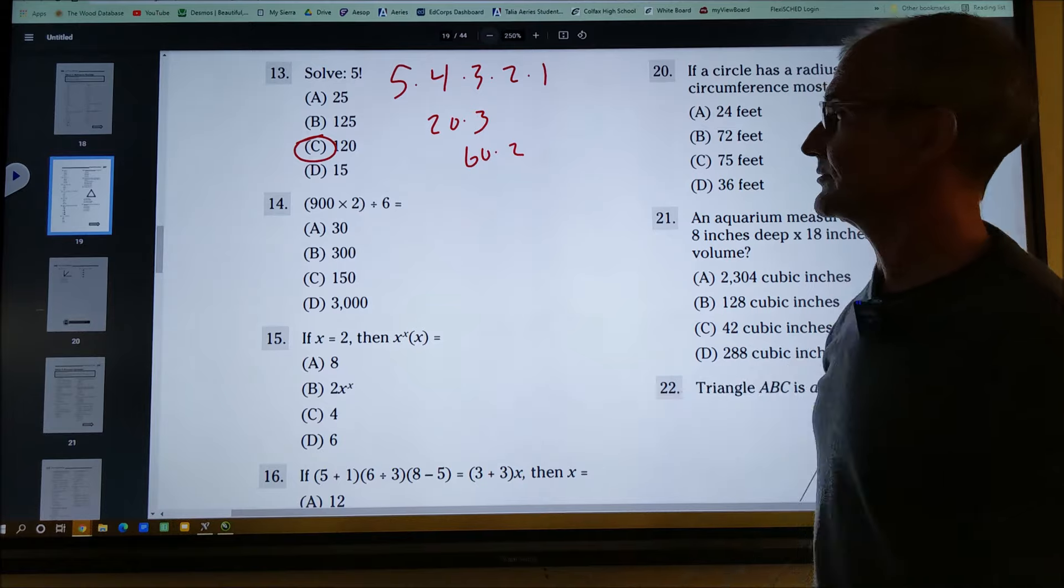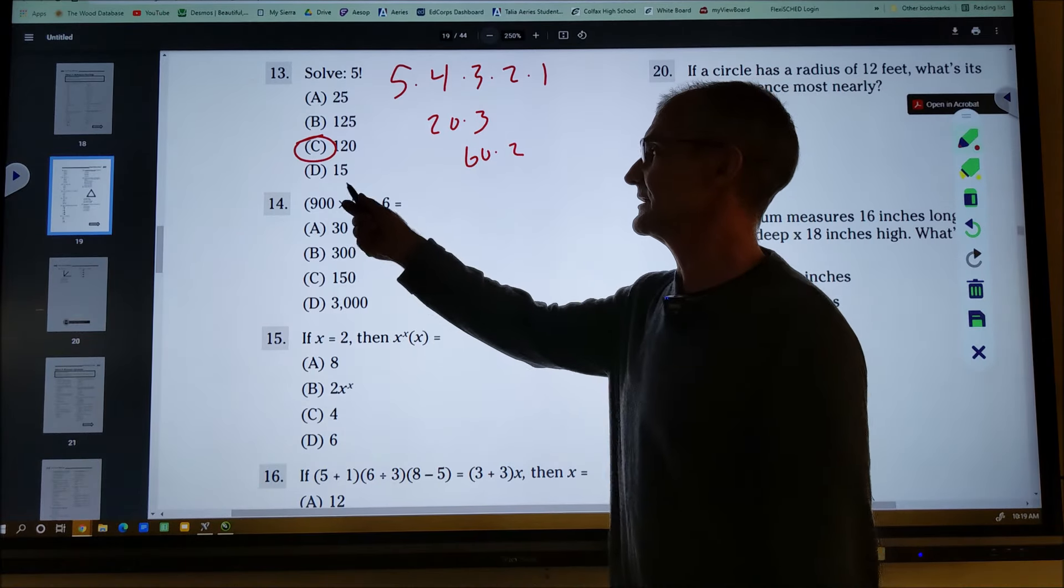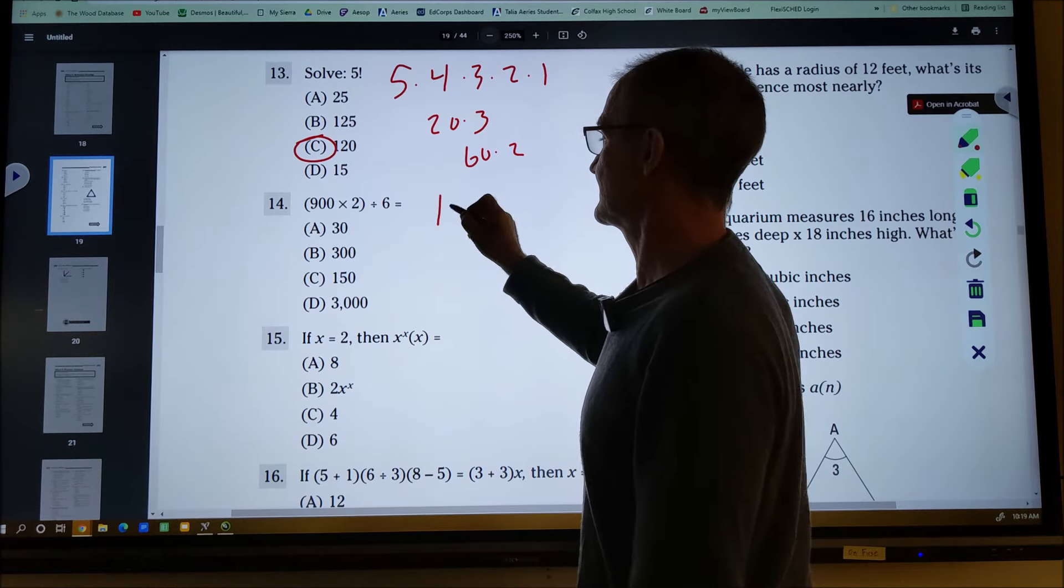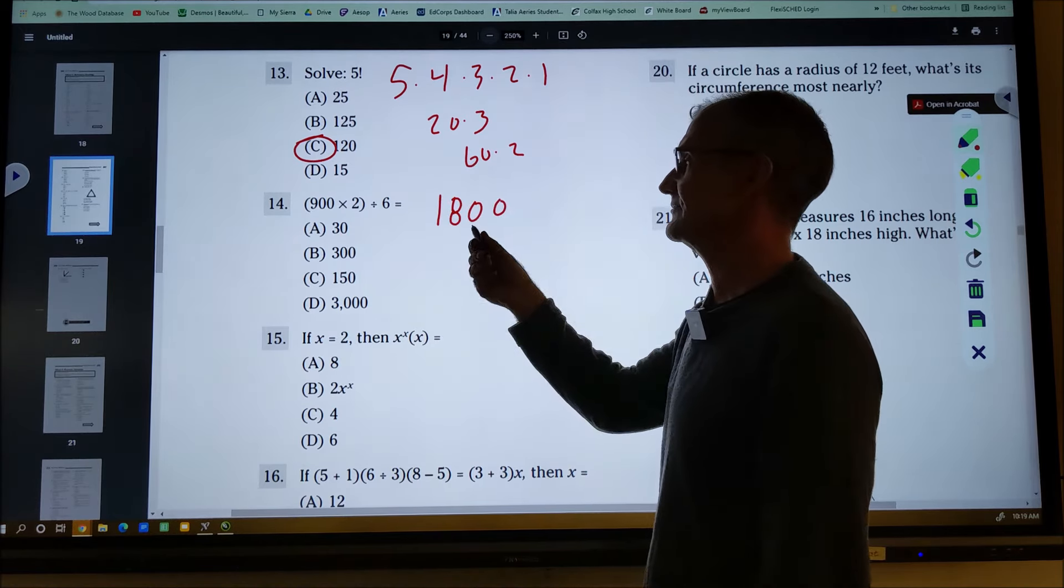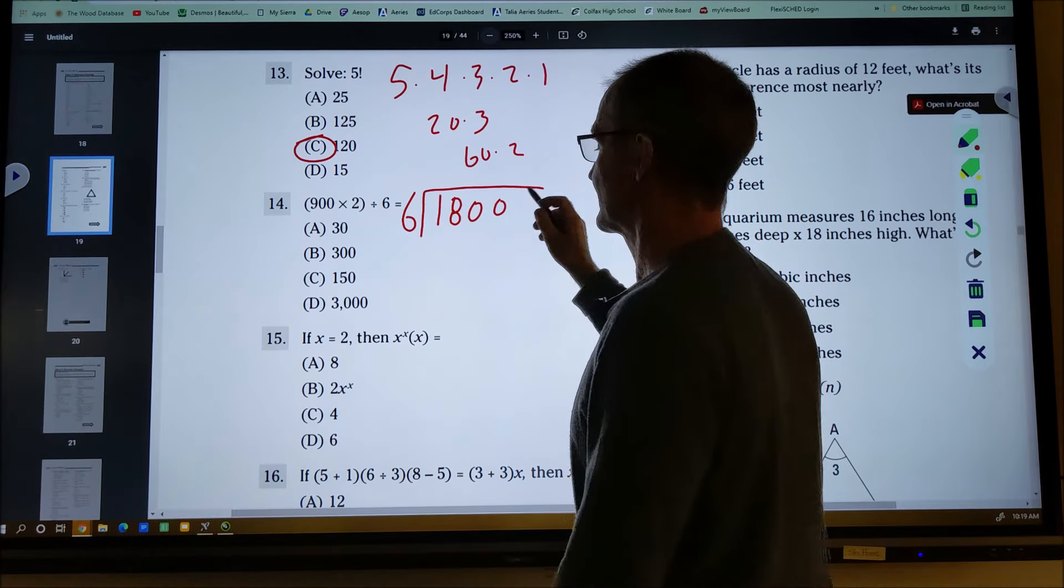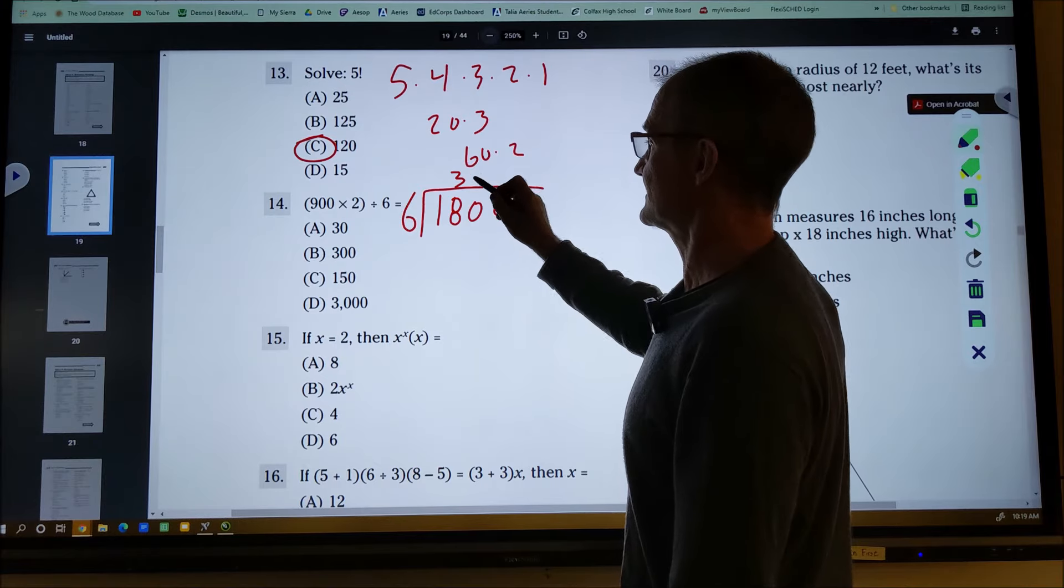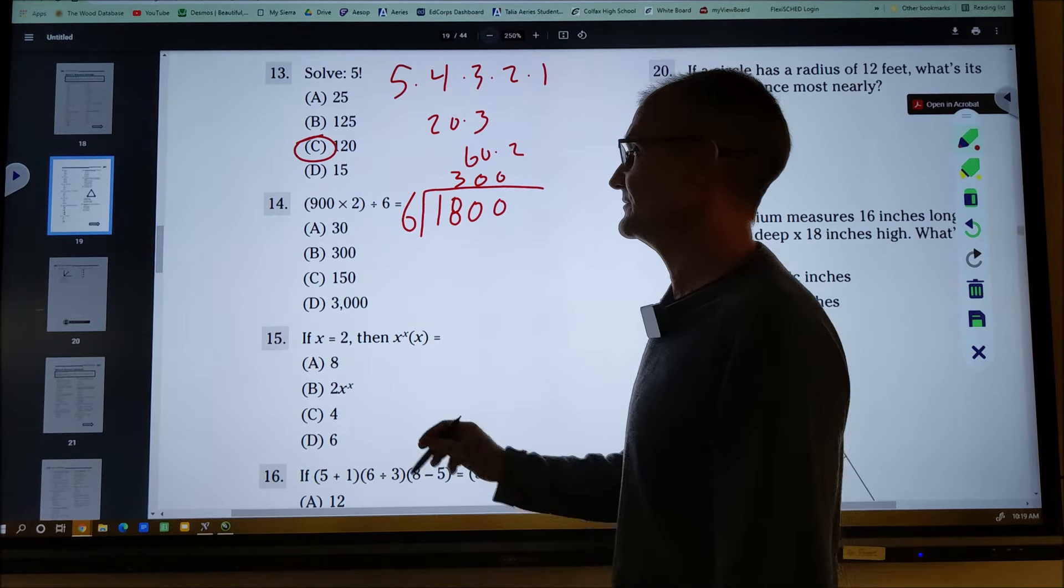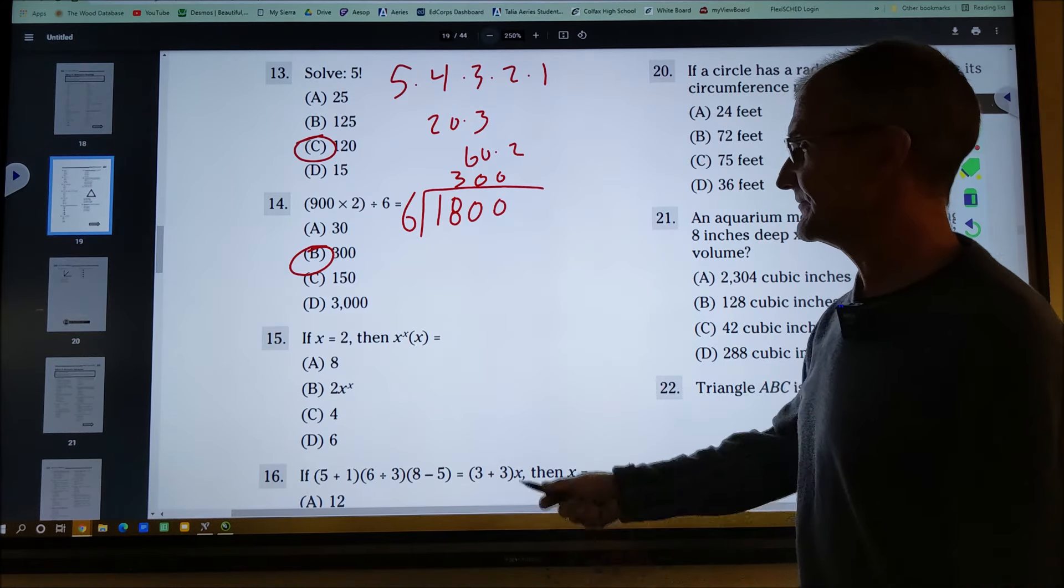Number 14, order of operations, parentheses before division. Nine times two is 18 plus those two zeros on the end. So 900 times two is 1800 divided by six. Six can go in at 18 three times and then zero, zero. So the answer is 300 or answer B.